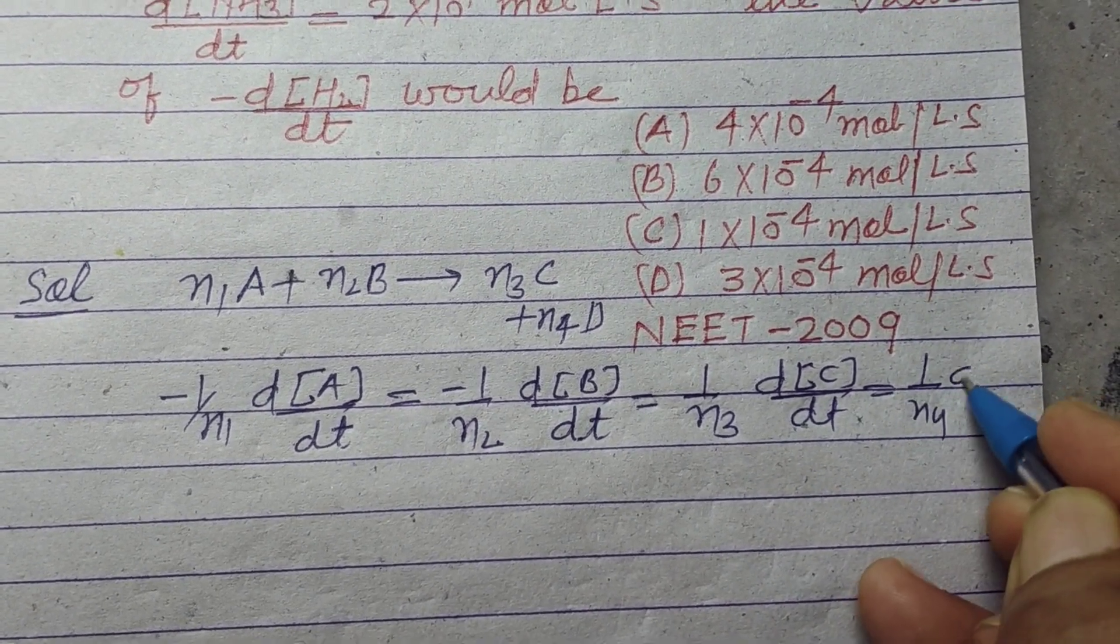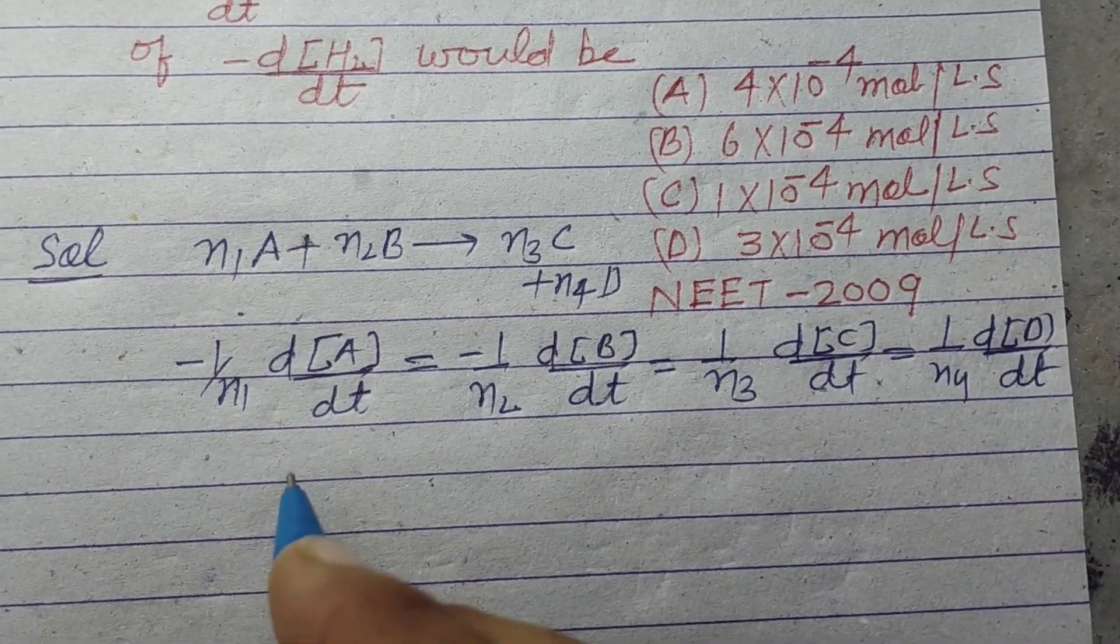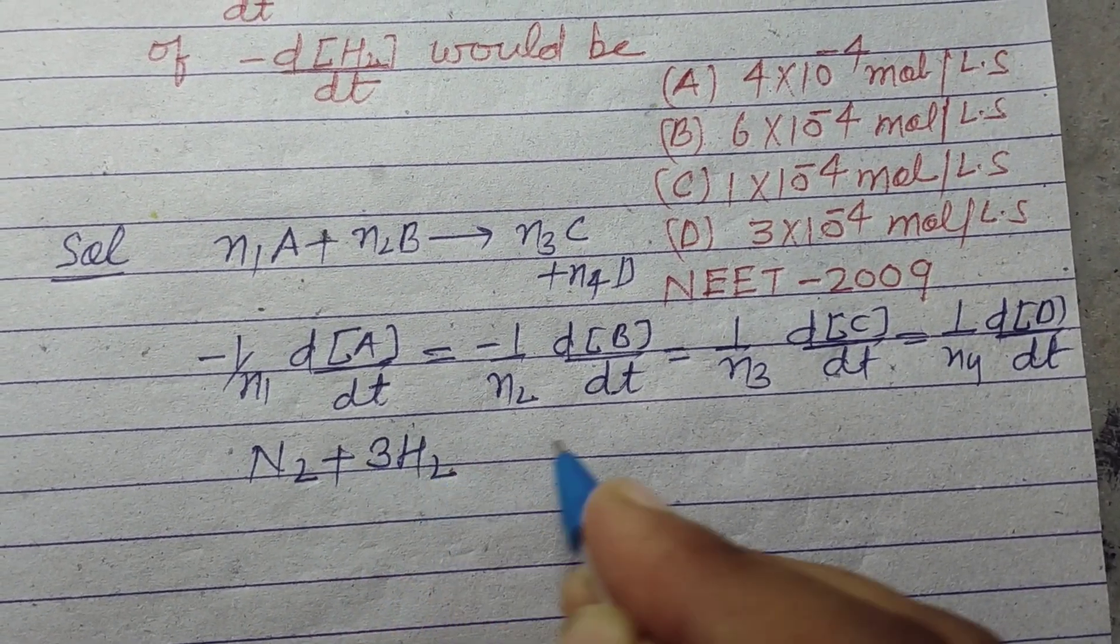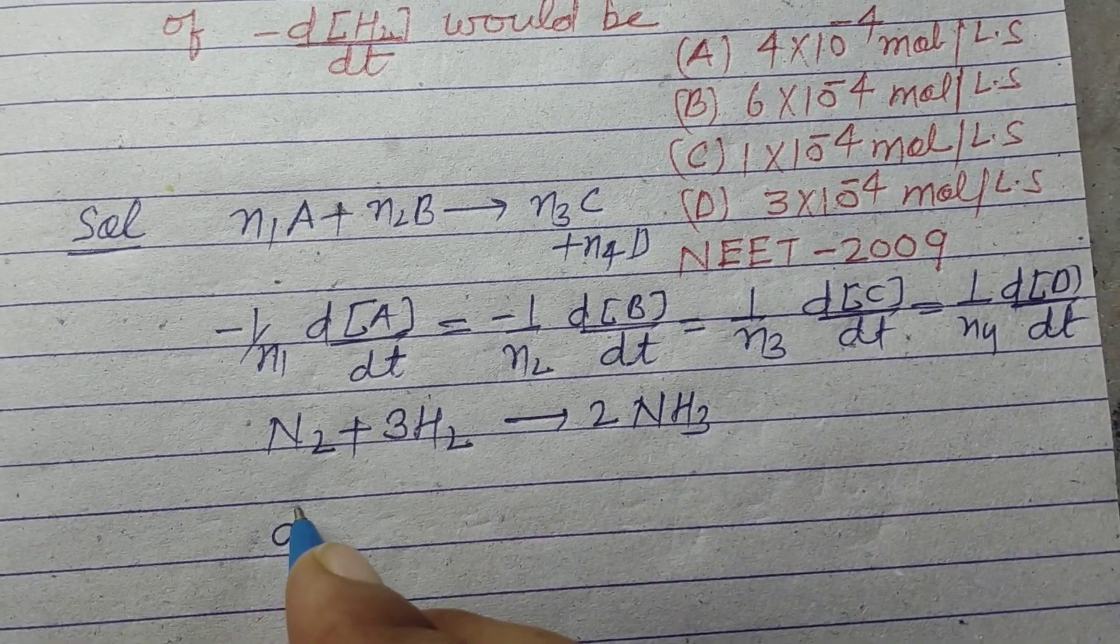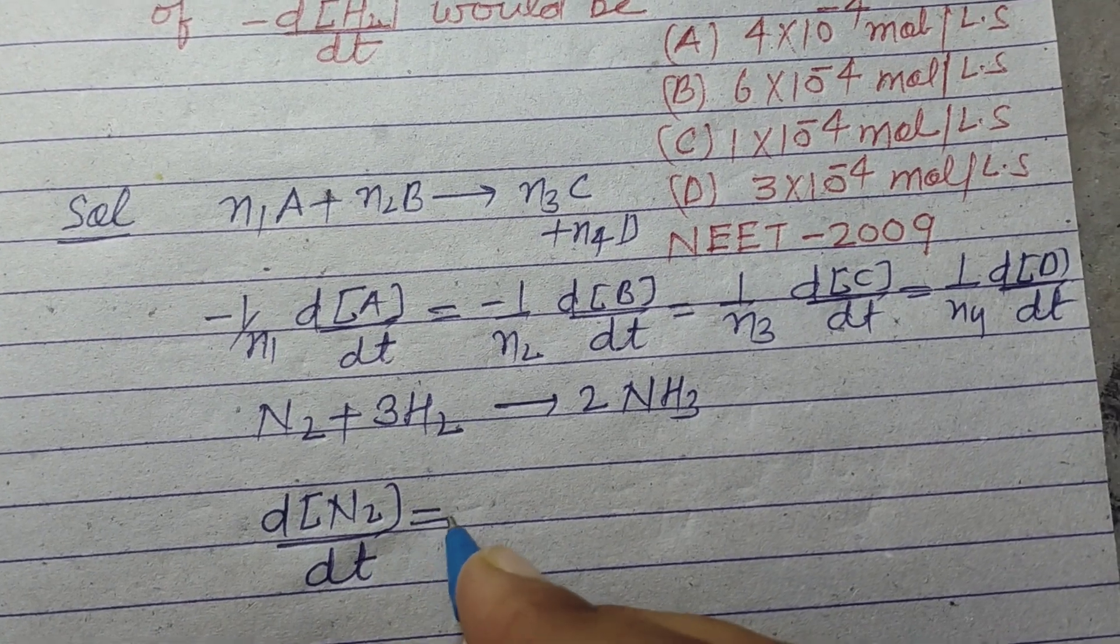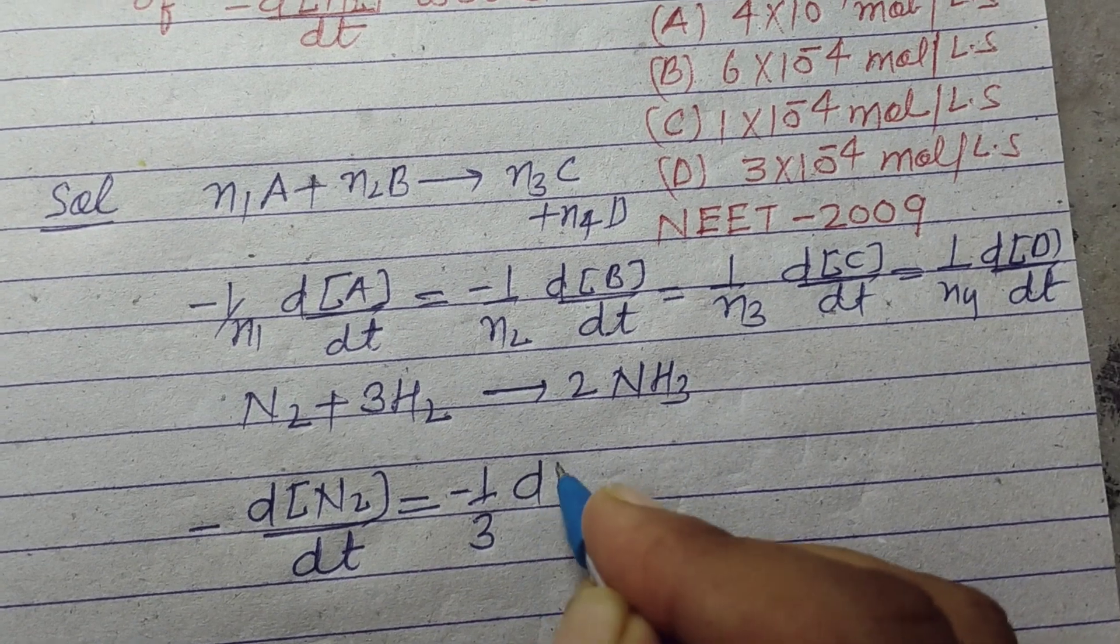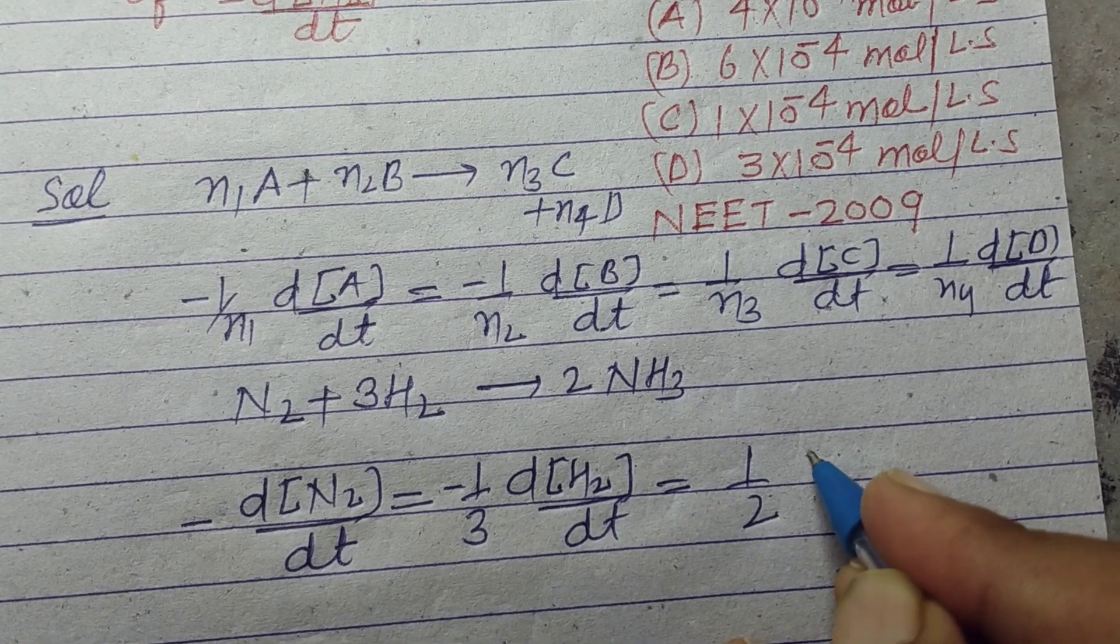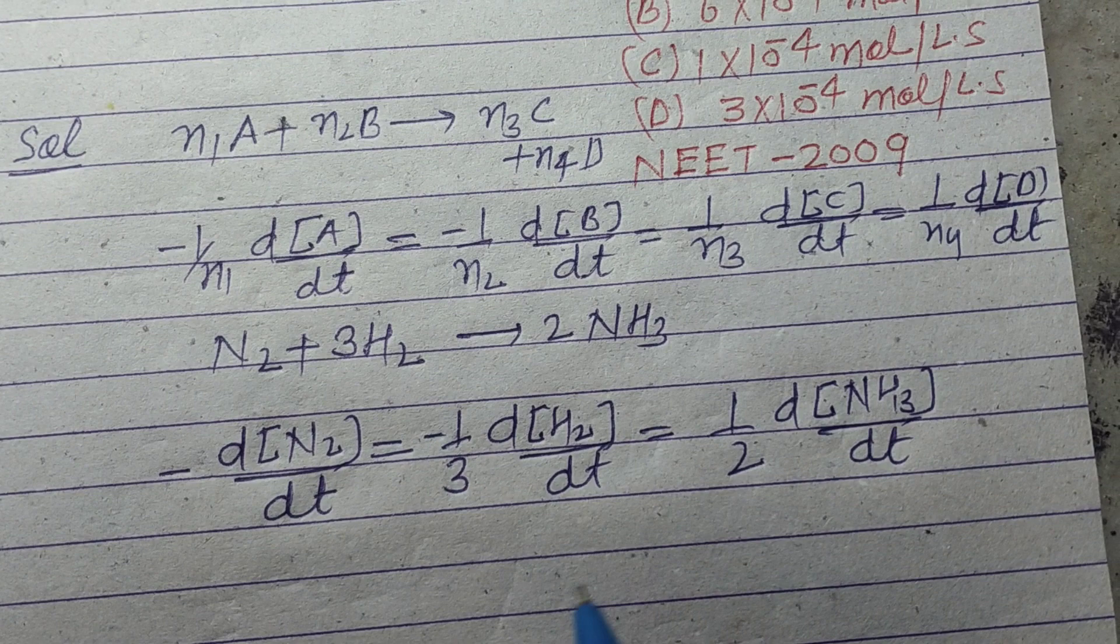So here N2 + 3H2 gives rise to 2NH3, therefore -1 d[N2]/dt is equal to -1/3 d[H2]/dt equal to 1/2 d[NH3]/dt.